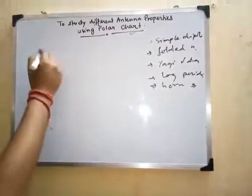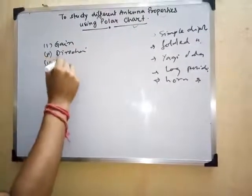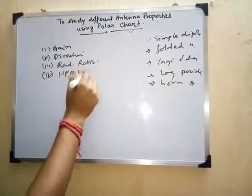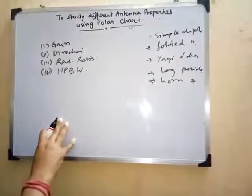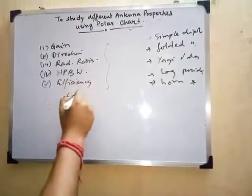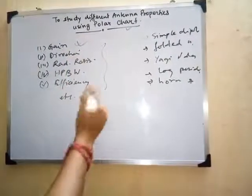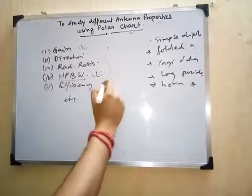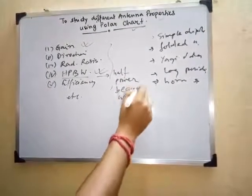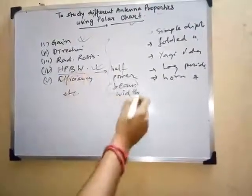We need to study a few properties of these antennas: gain, directivity, radiation resistance, HPBW, and antenna efficiency. For the sake of our laboratory experiment, we will generally evaluate the gain and the HPBW. HPBW stands for half power beam width — note that BW here means beam width, not bandwidth.